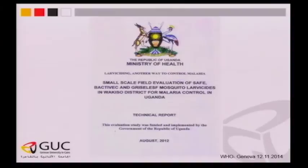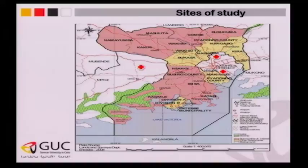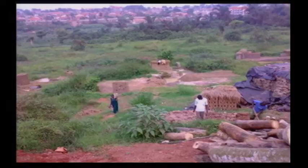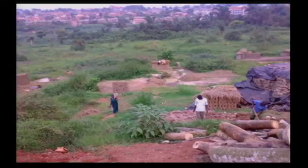Here we find the Ministry of Health comparison in Uganda — a small-scale field evaluation of SAFE against bacteria-based bio-insecticides — and they found the product to be very efficient and cost-effective compared to the others. That is the site of the study in three different places done since 2008. In Kampala, the main city of Uganda, you will find embedded swamps. Where the Ministry of Water treated, you find no malaria larvae existing in these areas.